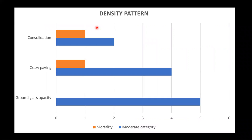Coming to the density pattern in the moderate category patients: 5 patients showed ground glass opacities, 4 patients showed a crazy paving pattern — out of which one succumbed to COVID-19 disease — and 2 patients showed consolidation, out of which mortality was seen in one patient.